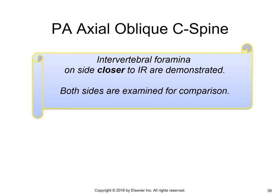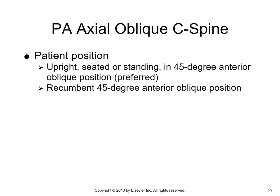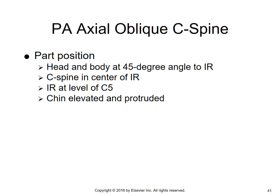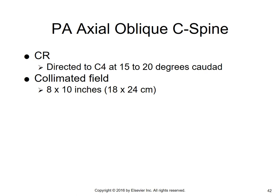For PA axial obliques, the intervertebral foramina on the side closer to the IR are demonstrated. Both sides are done for comparison. Patient is upright or standing at 45 degrees. Head and body are at a 45-degree angle to the IR. C-spine centered in the IR, IR at the level of C5. Chin is elevated and protruded. Central ray is directed 15 to 20 degrees caudal — note the difference from AP axials. Collimated field remains at about 8 by 10 inches.